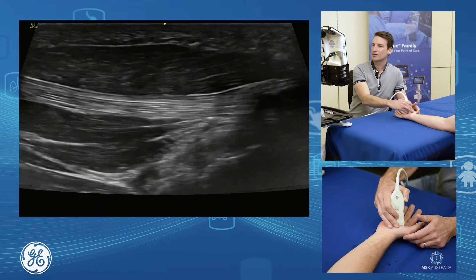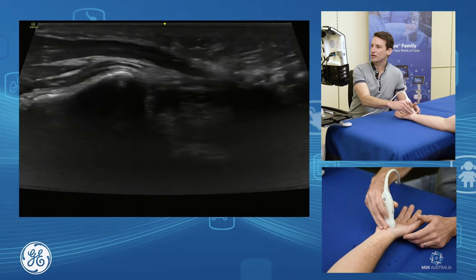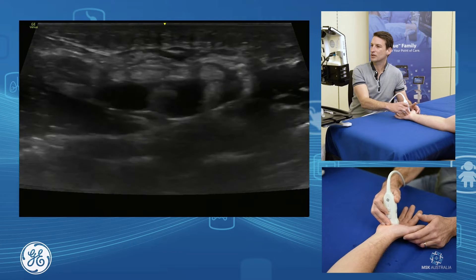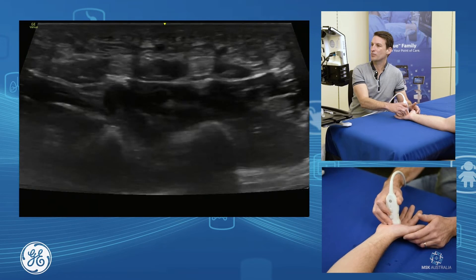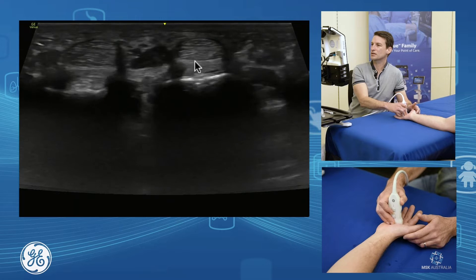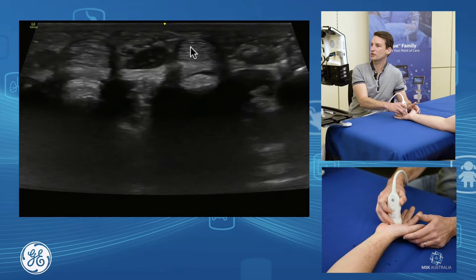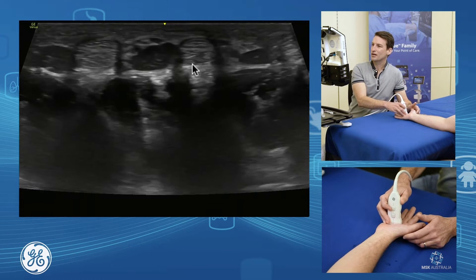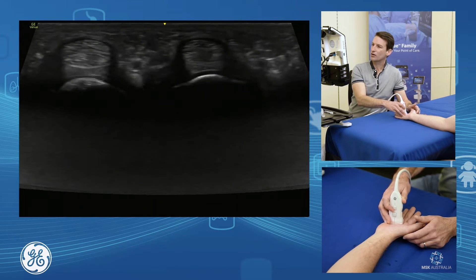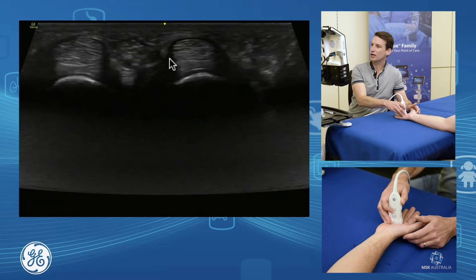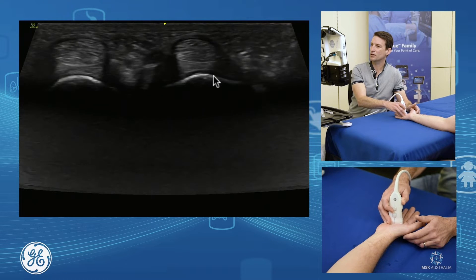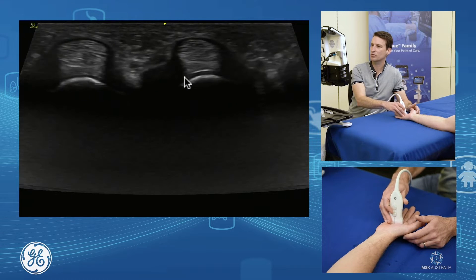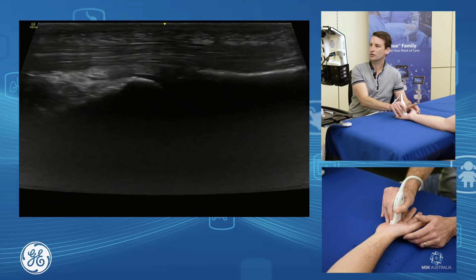Quite easy to visualize. Those are our tendons that live in the carpal tunnel. As we continue out from the carpal tunnel, we come down through into the palm and we can see our flexors of the fingers - flexor digitorum superficialis sitting over flexor digitorum profundus. As we continue down, we come over our MCP joints and this is where our A1 pulley lives, sitting up over the volar plate of our MCP joint.